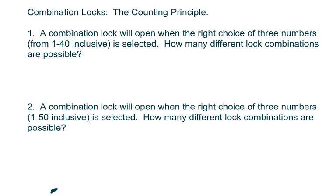Hi everyone, we're going to use the fundamental counting principle for combination locks. We have a combination lock that will only open with the choice of three numbers from 1 through 40 inclusive. That means you can use 1 and 40. How many combinations are possible?